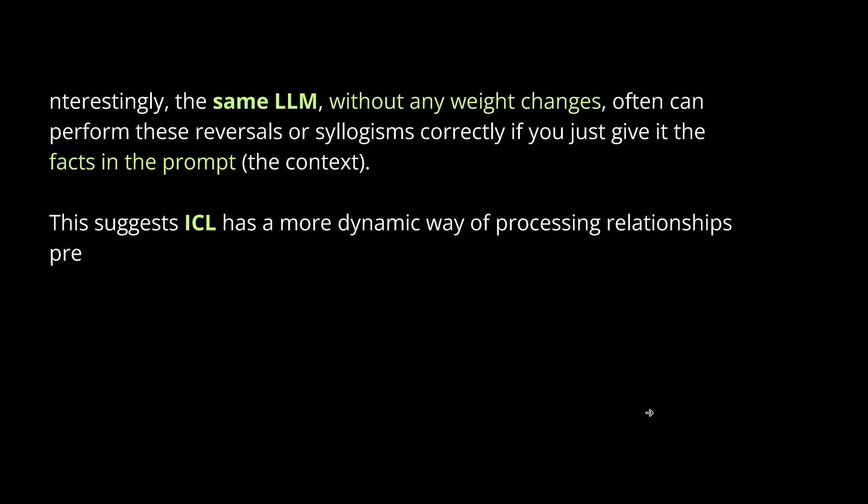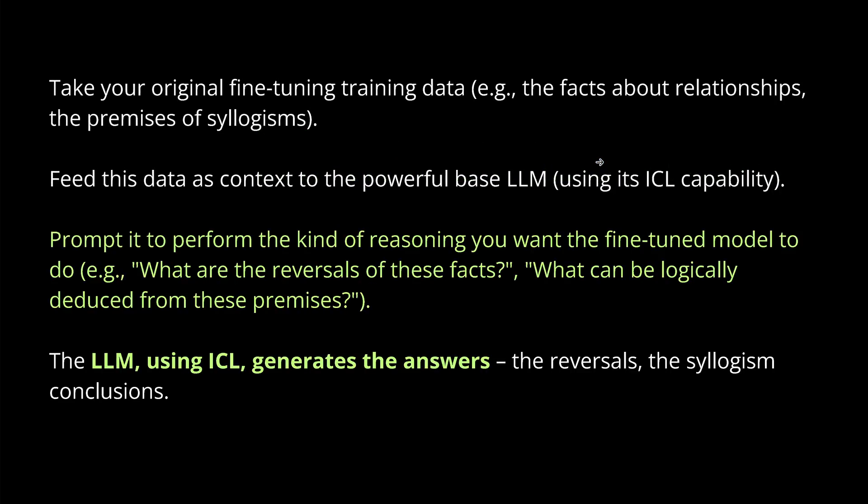So, what is the solution? The same LLM, without any weight changes, if we go to in-context learning now, we provide here the facts in the prompt, ICL can do it. So, this suggests that ICL has a more dynamic way of processing the relationship presented on the fly, of course, remember, within the context window only. So, guess what? The main solution is so simple. Take your original fine-tuned training data set, feed this data as context to a powerful base LLM.